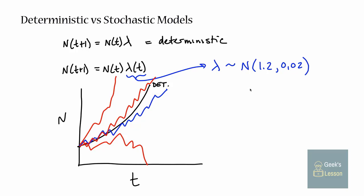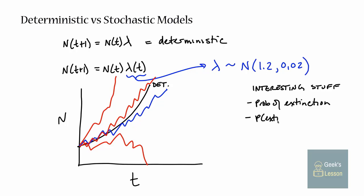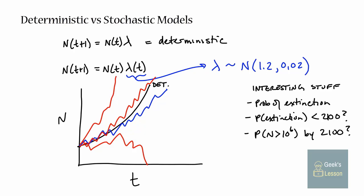Stochastic models let us ask all kinds of interesting questions about our system that deterministic models don't allow. For instance, what's the probability of extinction in a population with these growth parameters? Or what's the probability of extinction in the next 100 years before the year 2100? Or what's the probability that n is going to be greater than a million by 2100? In a deterministic model, I can tell you what my population size will be at any given time, but that's all, because there's no allowing for the random events that are really a feature of every biological process.